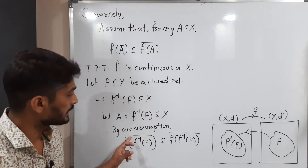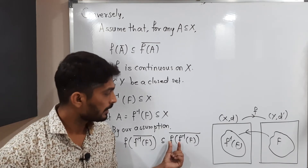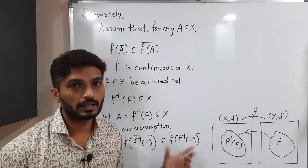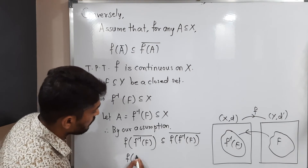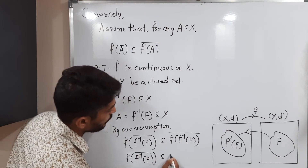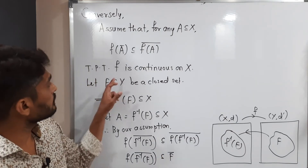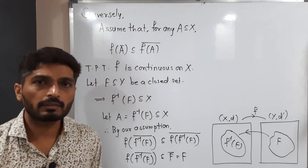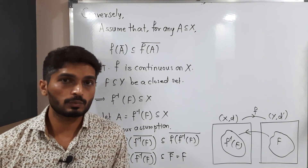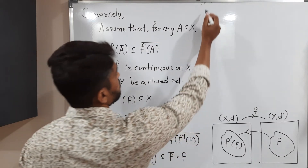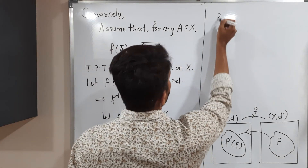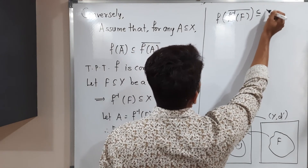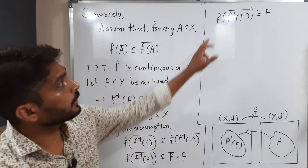Note that f and f⁻¹ cannot be cancelled directly because there is a closure bar present. However, inside the closure on the right-hand side, f and f⁻¹ can be cancelled. So f(f⁻¹(F))̄ ⊆ F̄. But by assumption, F is a closed set, so F̄ = F. Using that a set is closed if and only if it equals its own closure, we get f(f⁻¹(F)̄) ⊆ F.